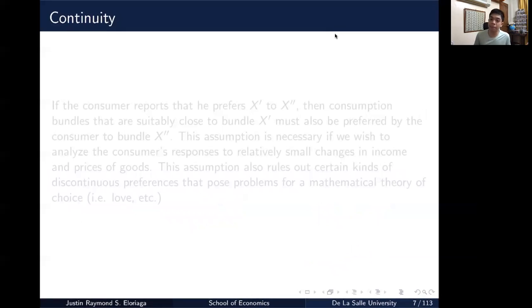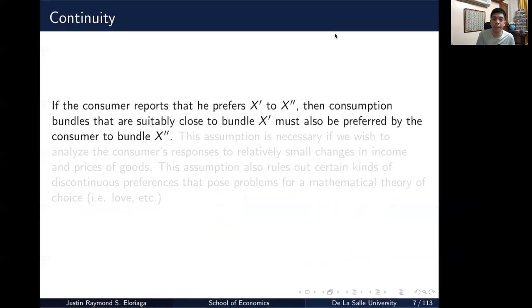The third assumption is for mathematical ease, is continuity. It just states that if the consumer reports that he prefers X prime to X double prime, then consumption bundles that are suitably close to bundle 1 must also be preferred by the consumer to bundle 2. So if you say that you prefer X prime to X double prime, then likely there exists a bundle, say X triple prime, which you may be indifferent to with X prime, that you would say that you prefer X triple prime to X double prime. If X triple prime is suitably close or will make it indifferent compared to bundle 1, then likely you would prefer that bundle over the original bundle to which you didn't prefer over bundle 1.